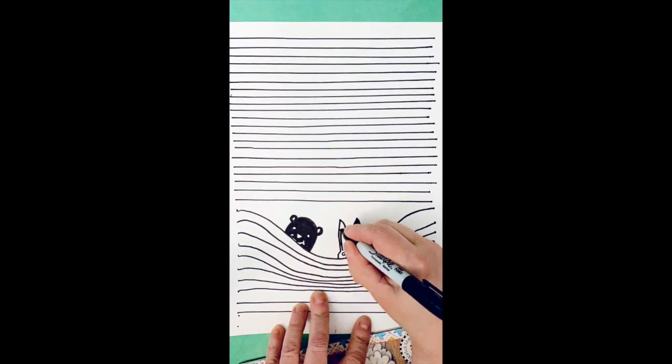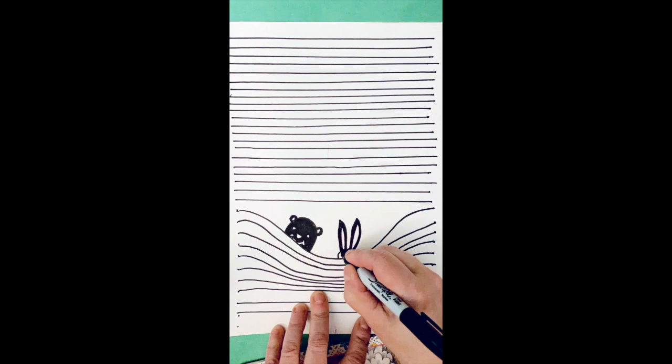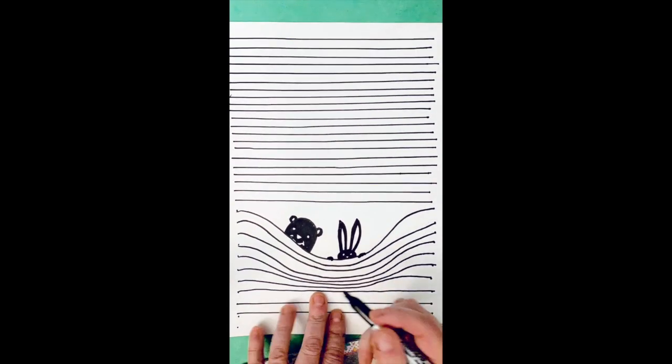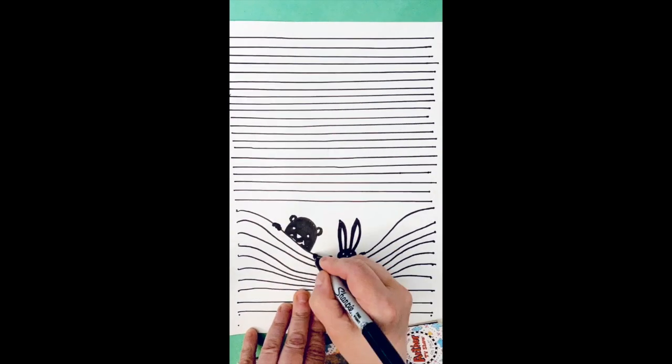You can do any animal or people or anything you want poking through. Put their little paws and they are holding down the blinds, and there you go.